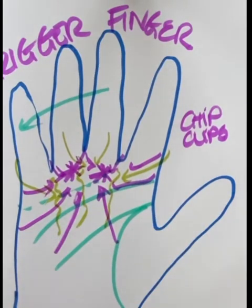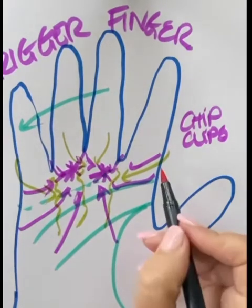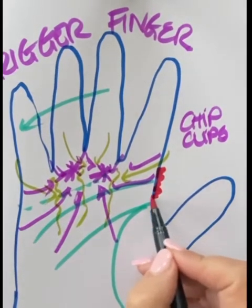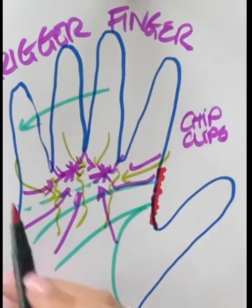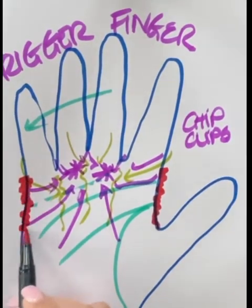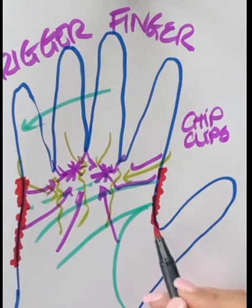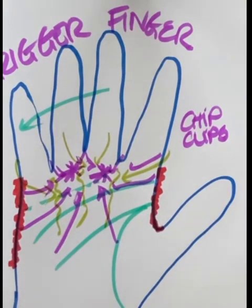So my thought is that the dorsal skin and the volar skin meet here at the sides and the seams, obviously all the way up and down. But these locations are big ones for me, and this is why I use those chip clips.